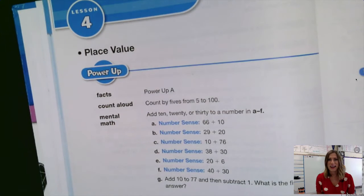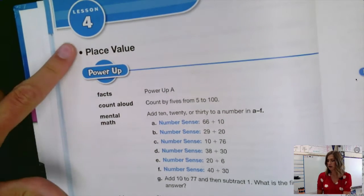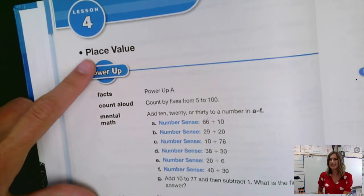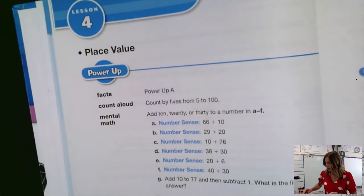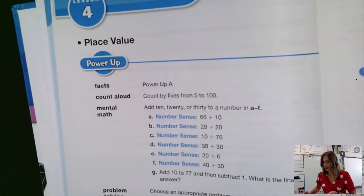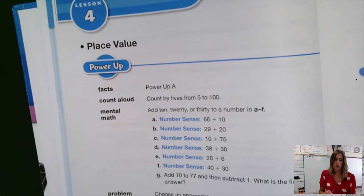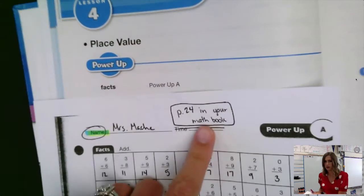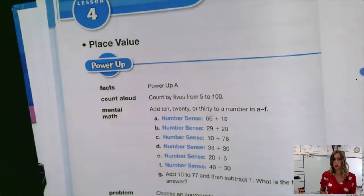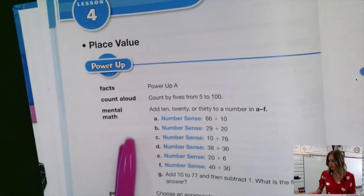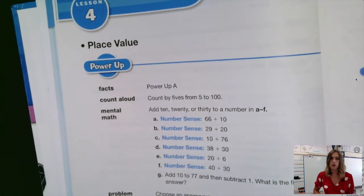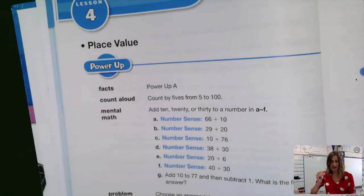All right, third grade, it's time for our power-up. We're on lesson four. You can see it says place value here and then we're going right here where our power-up is. That starts on page 24. See how I always put page 24 — tells you where to go. Make sure you do your facts, mental math, problem solving, and then we'll get going on correcting it. Just press pause. When you're done, press play again and we'll get to correcting those facts.